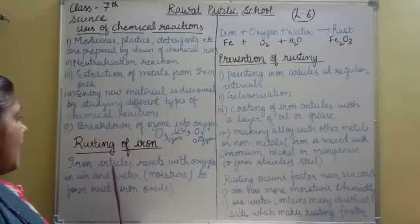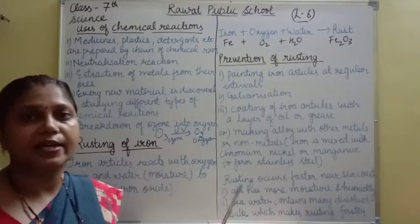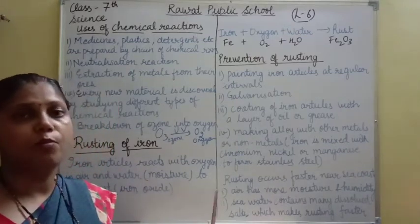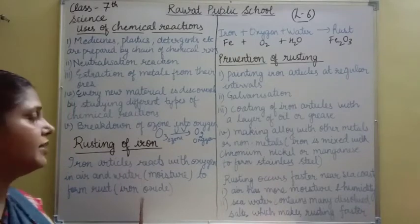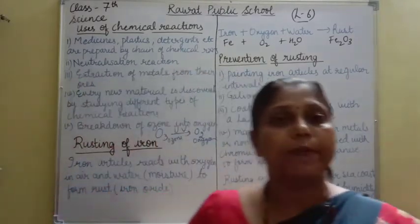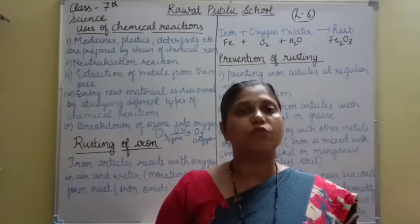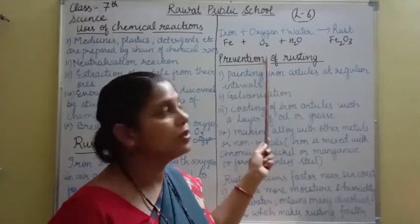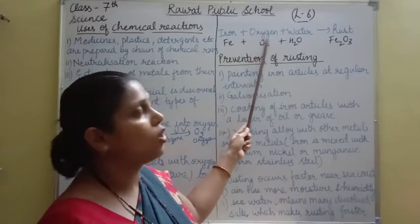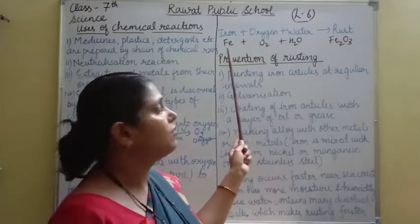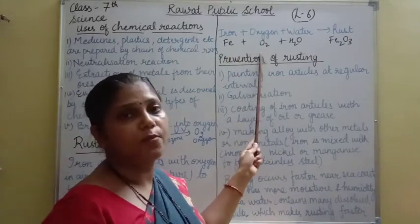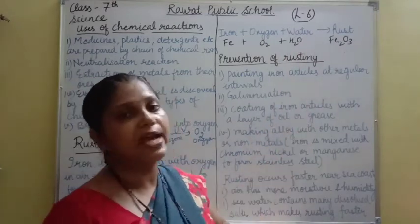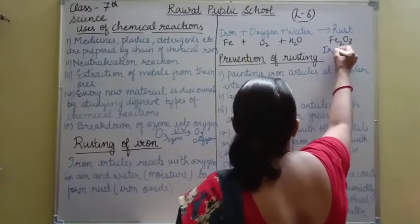So see — rusting of iron: iron articles react with oxygen present in air, and water or moisture, to form rust, that is iron oxide. The reaction is also given here: iron when it combines with oxygen and water, it forms rust. Iron ka formula hai Fe, oxygen ka formula hai O2, water ka H2O. Toh yeh ek new substance form kar raha hai — rust. That is Fe2O3, and is ko hum iron oxide kehte hai.